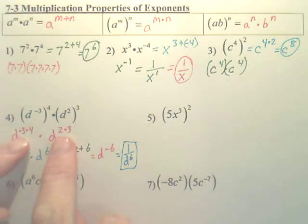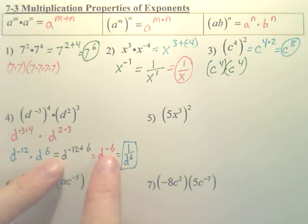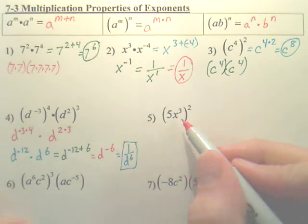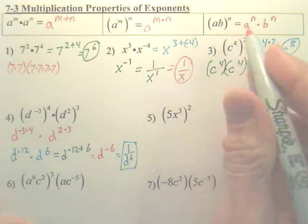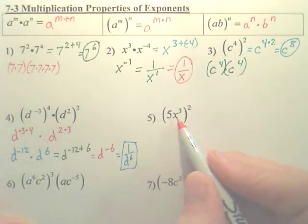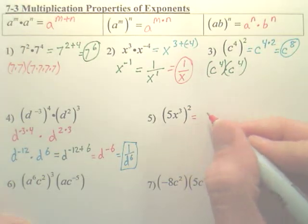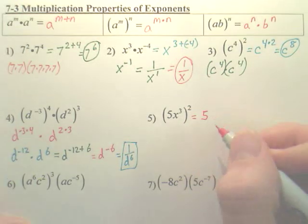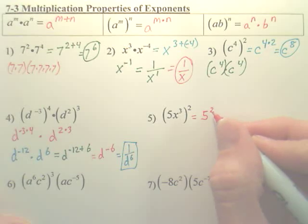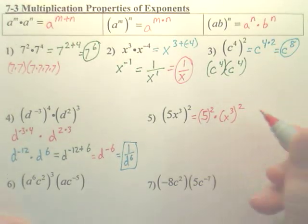So the steps are: first take them to the powers, then add the powers, then handle the negative powers. Number five looks like the third property — a, b both to the n. This is going to be five squared times x to the third squared. I distributed the squared to both pieces.